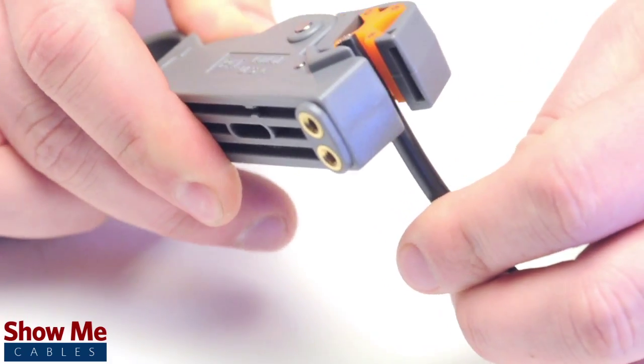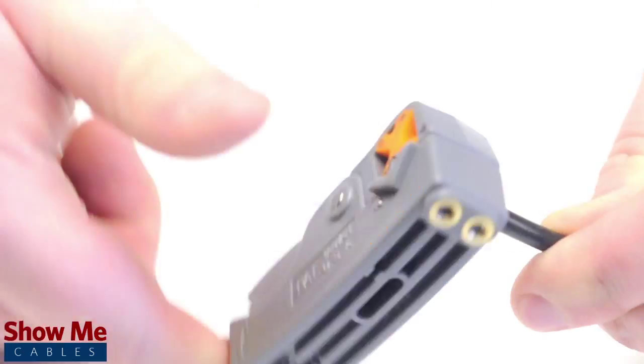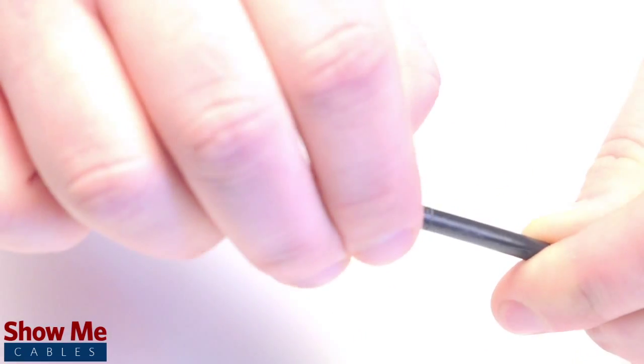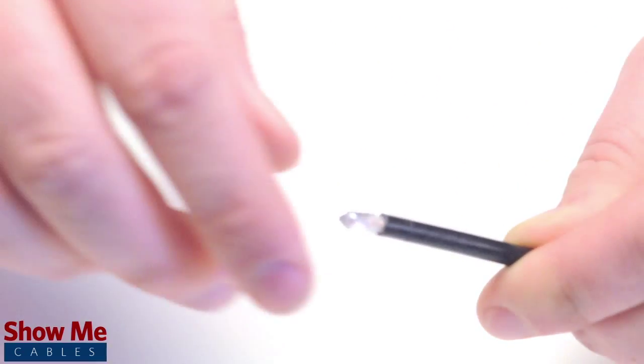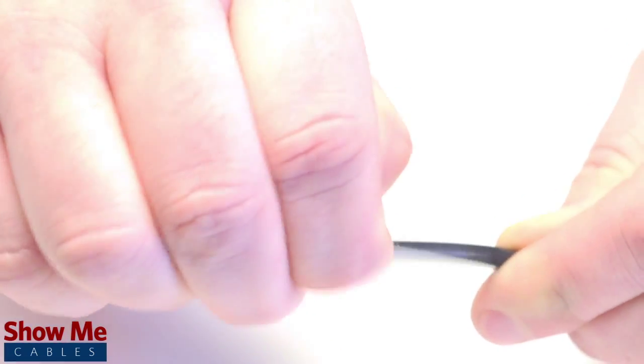Start by inserting the ferrule over the outer jacket of the cable. Then, using your cable stripper, strip back the outer jacket and dielectric. The advantage of using a cable stripper is that it will strip back the jacket and dielectric at the same time.